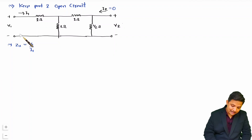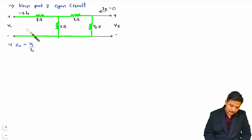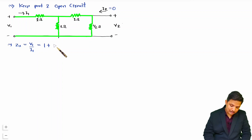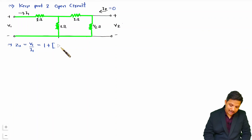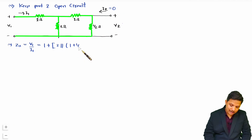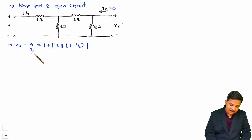Now that is just the impedance seen at port 1. What is that impedance? You see this 1 ohm resistor is in series with this network. Now in this network, this resistor is in parallel with the combination of the other two. Since I2 is 0, these two are in series. So we have 2 parallel with (1 + 1/2), and that equals V1 by I1, which is Z11.